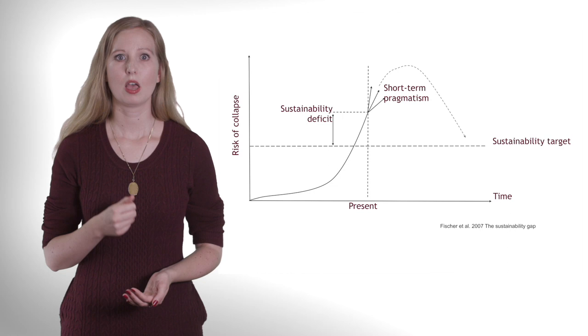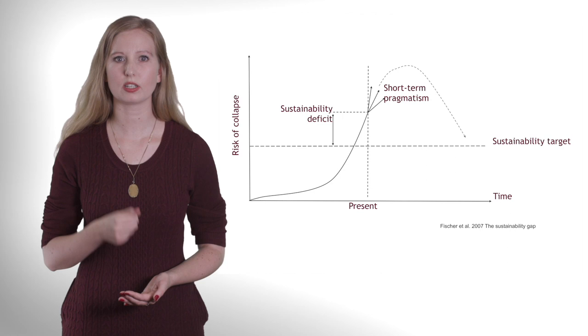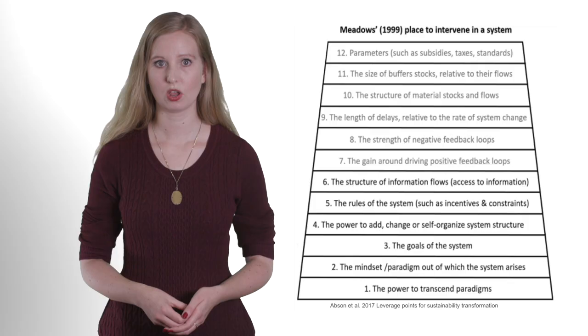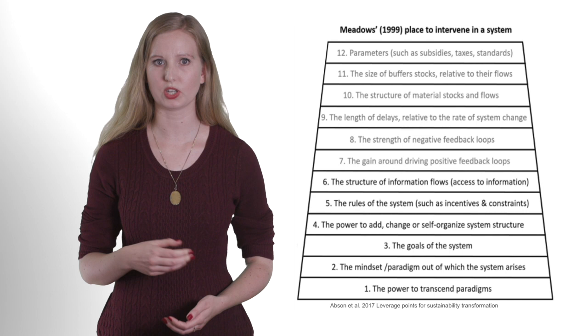Donella Meadows, one of the authors of the Limits to Growth back in 1972, was frustrated about this ineffectiveness of interventions just as much as we are now. So she came up with the idea of leverage points. Leverage points are places to intervene in a system where minor interventions can lead to relatively major changes. Meadows identified a hierarchy of increasingly effective leverage points on a scale from 1 to 12.